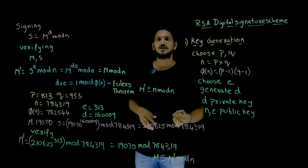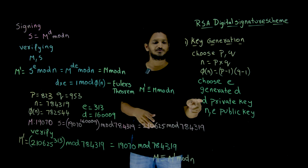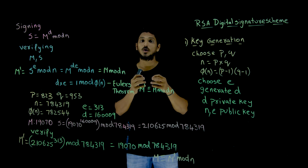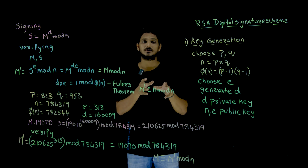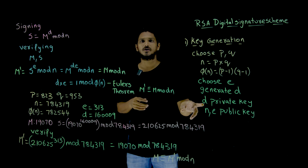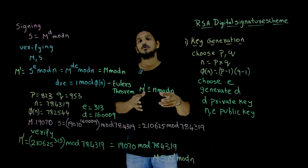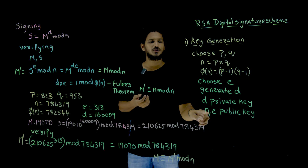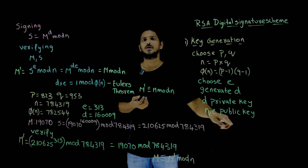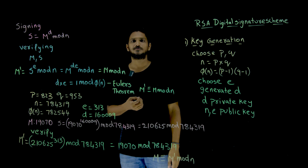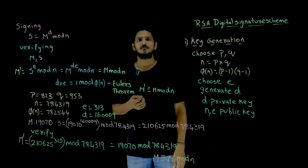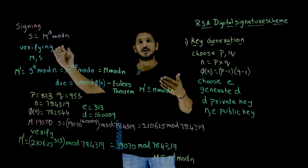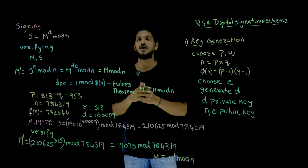So, after generating the keys, D is the private key. Those who want to send the message will use this private key. Those who want to verify the signature are going to use the public key. Now let's try to understand what happens — how the signing and verifying is done.